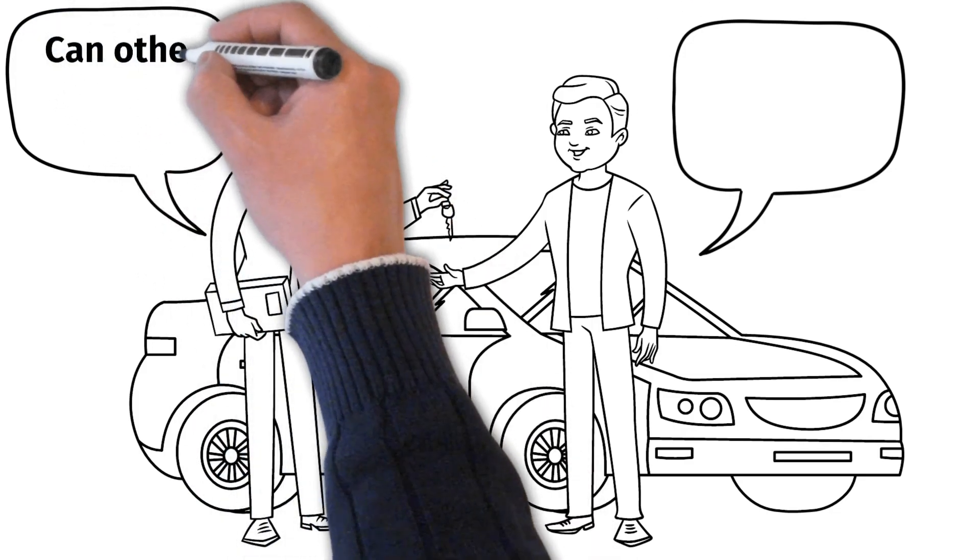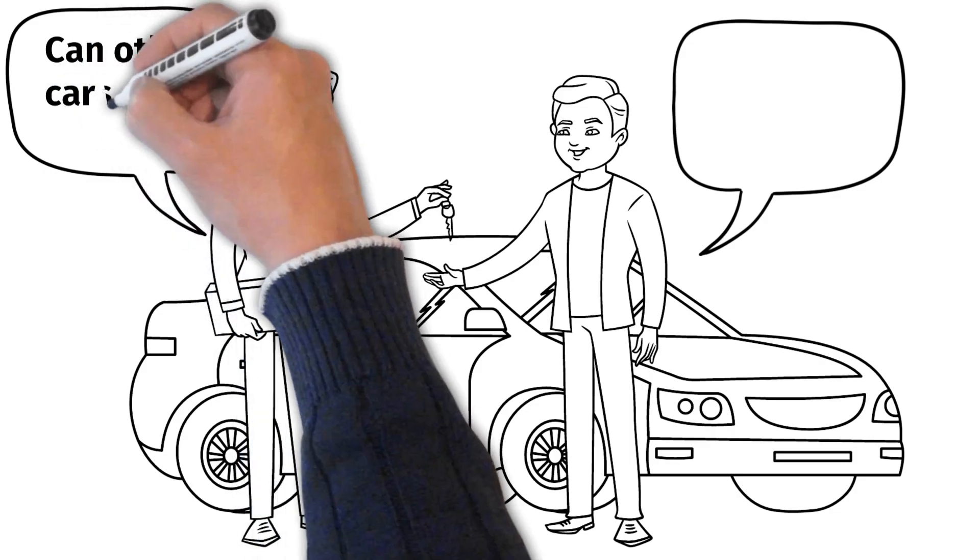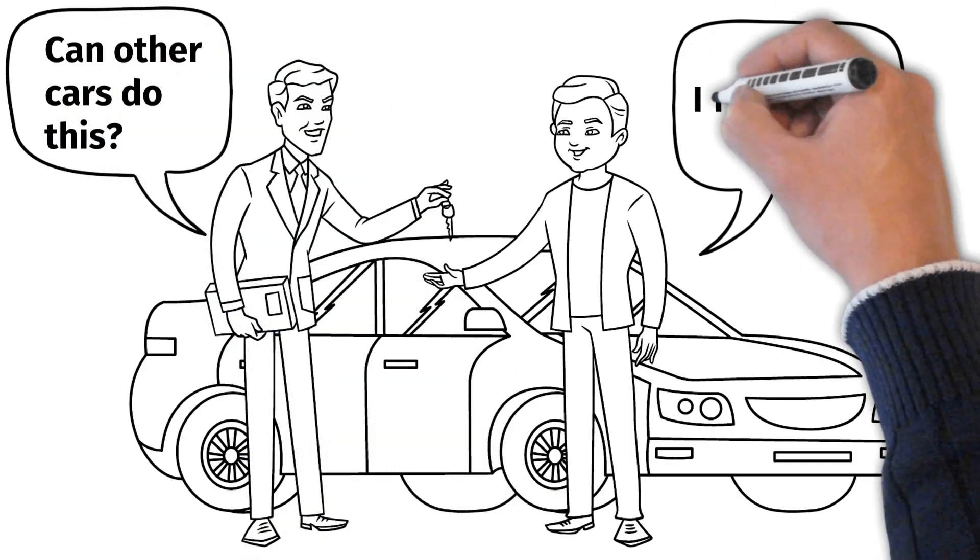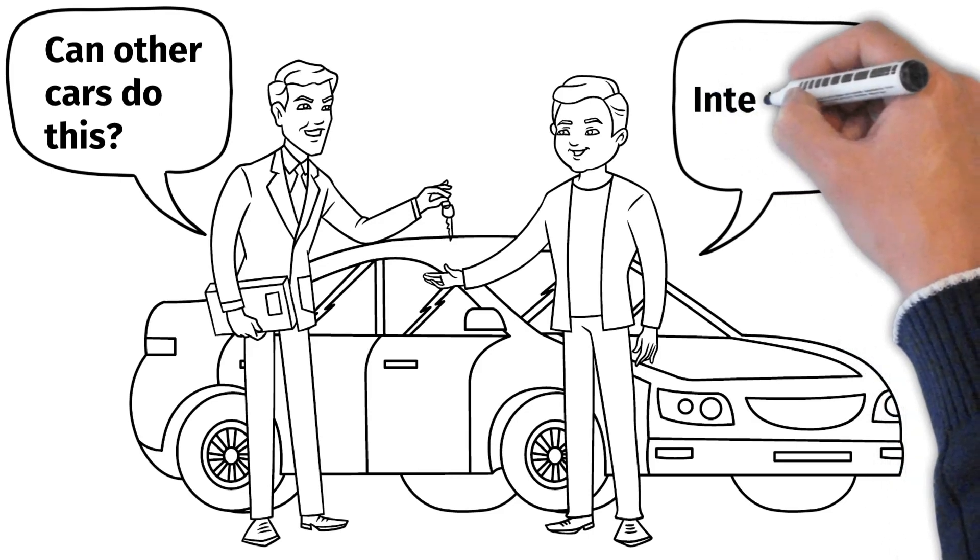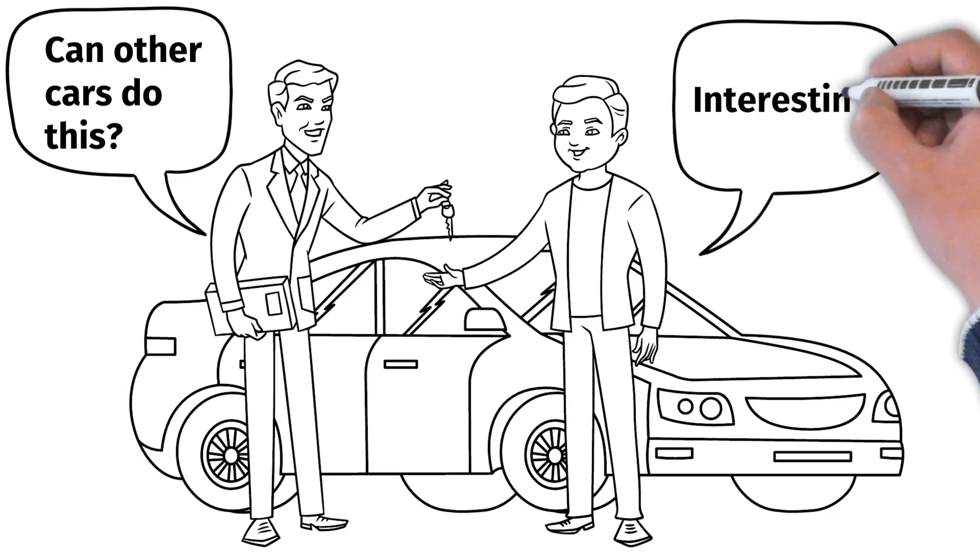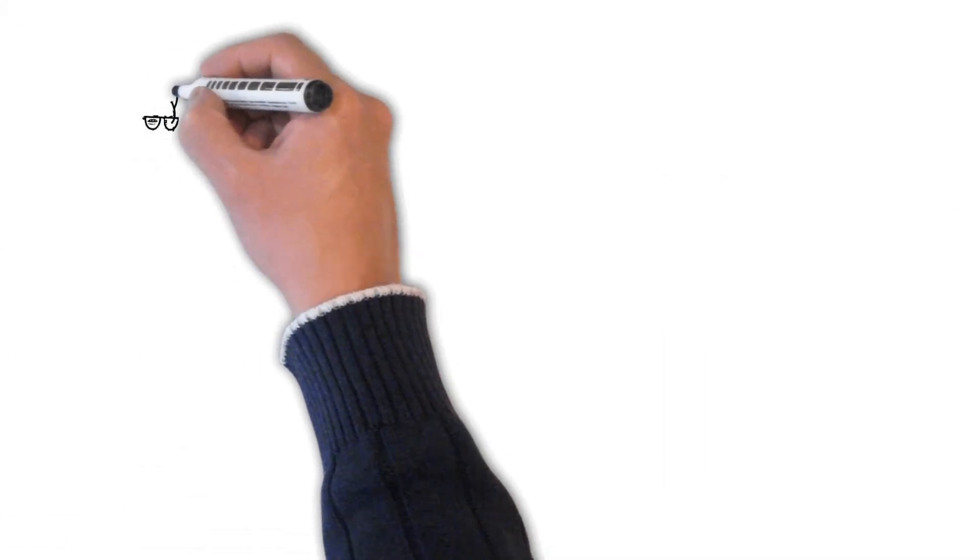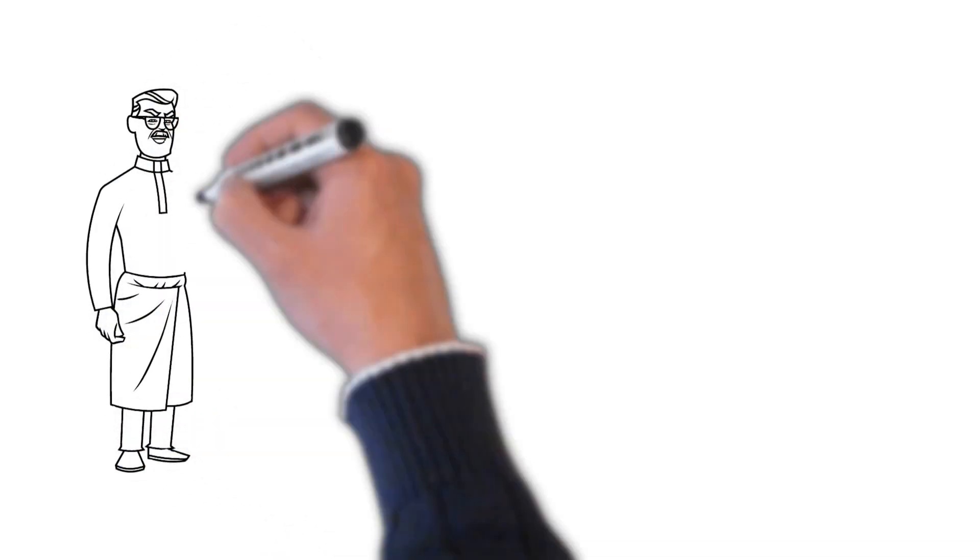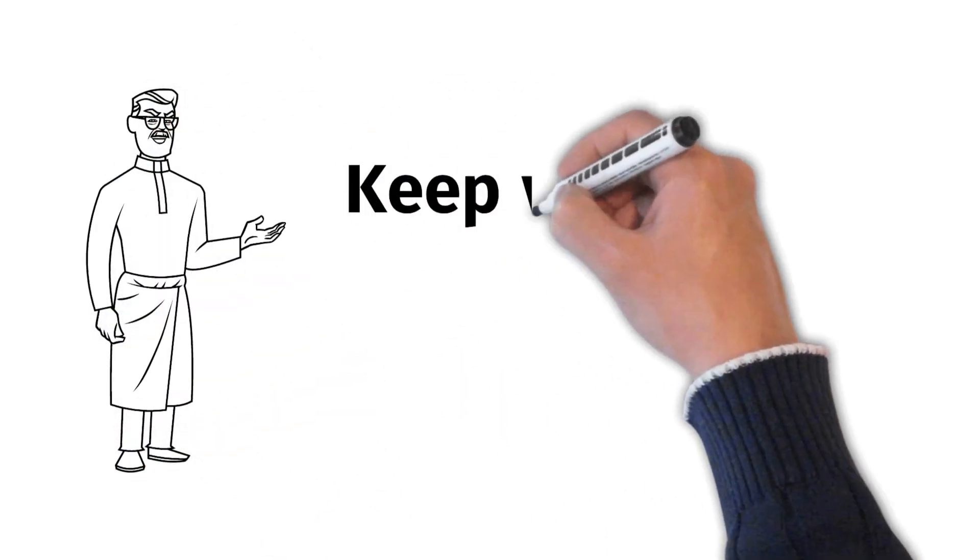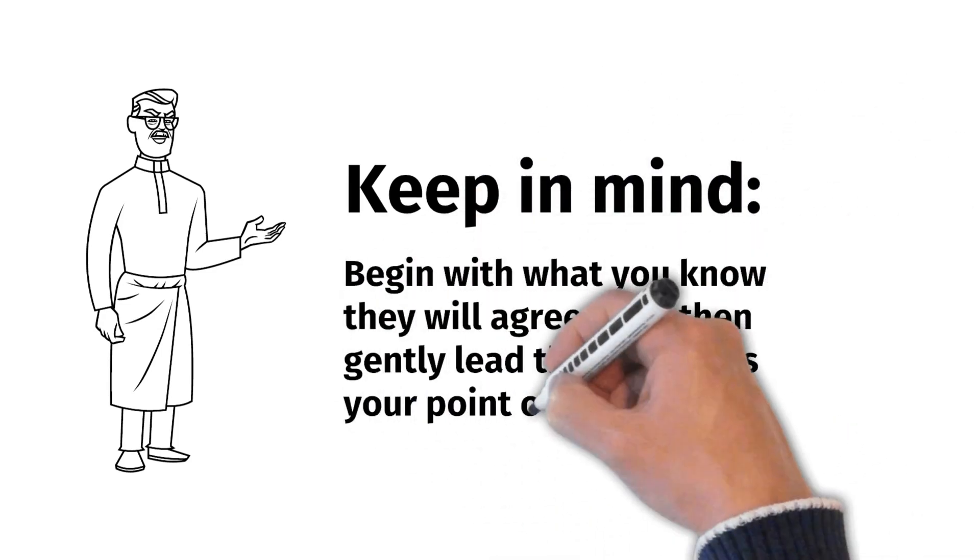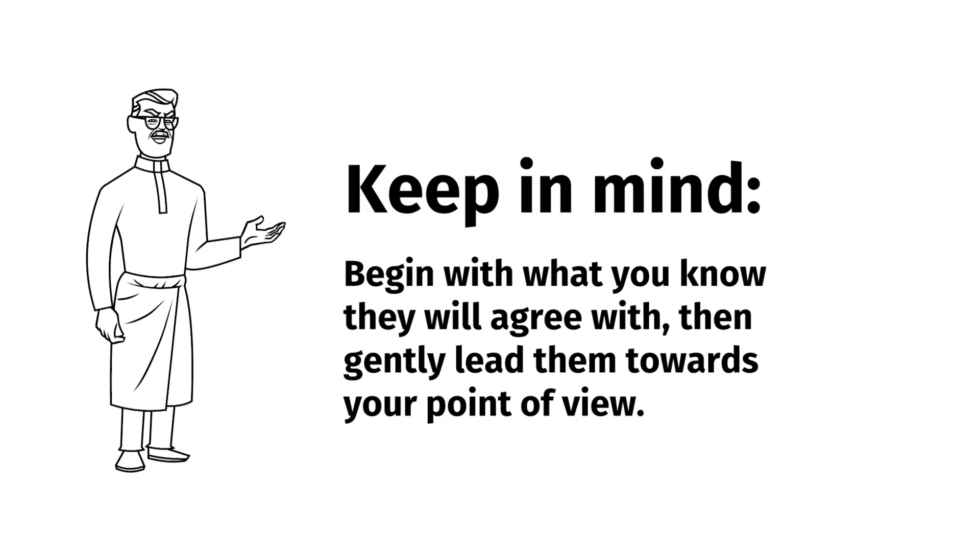By gently leading them towards your conclusions, you can get them to see things your way without ever having to argue. So the next time you need to persuade someone, remember the lessons of Socrates and Colonel House. Begin with what you know they will agree with, then gently lead them towards your point of view. With patience and persistence, you can achieve your goals without ever having to resort to conflict or confrontation.